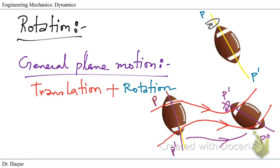That covers all the understanding we need for planar rigid body motion. Planar motion is two-dimensional; it helps us study translation and rotation at the same time. We studied the different types: rectilinear translation, curvilinear translation, rotation about a fixed axis, and general plane motion. Next, we're going to talk about translation itself and derive some equations and discuss concepts. See you in the next class — thank you.